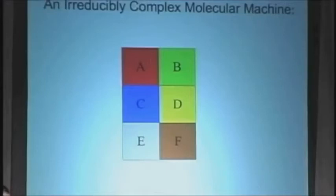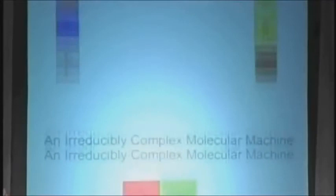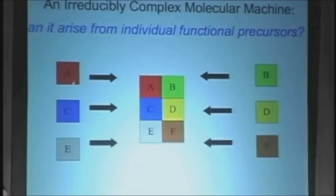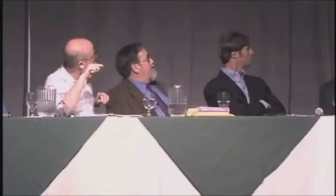Now, let me continue. Suppose you have an irreducibly complex molecular machine made up of six different parts, labeled A to F. Suppose that they started out as individual precursors, each of which had their own function. Now, suppose they got together somehow — you could have an irreducibly complex machine, the story goes, but each of the parts had their own function. I submit that even if all of these things are doing the exact same thing they would do in the irreducibly complex machine, you still can't get from these parts to here, even if they're doing the same thing.